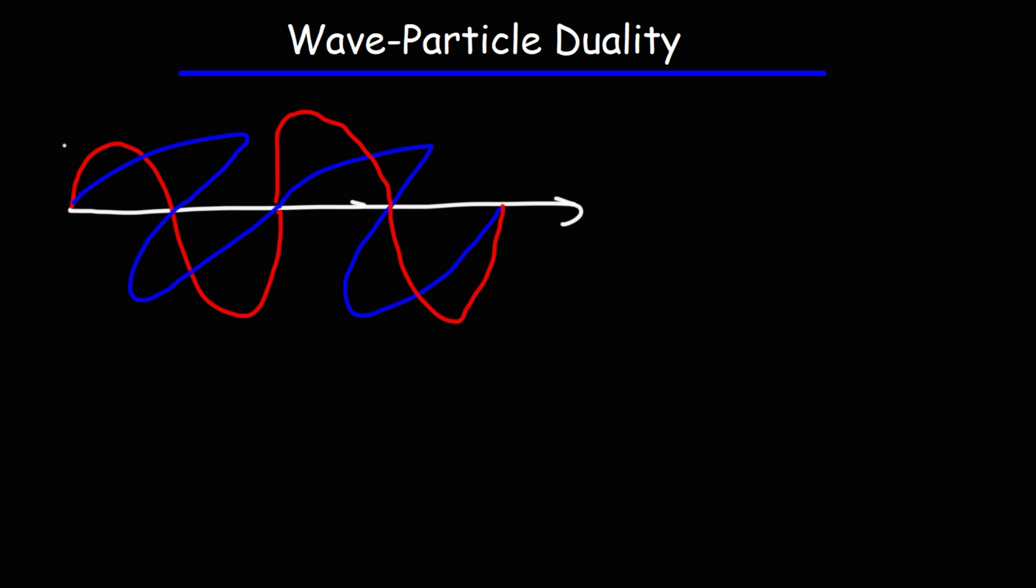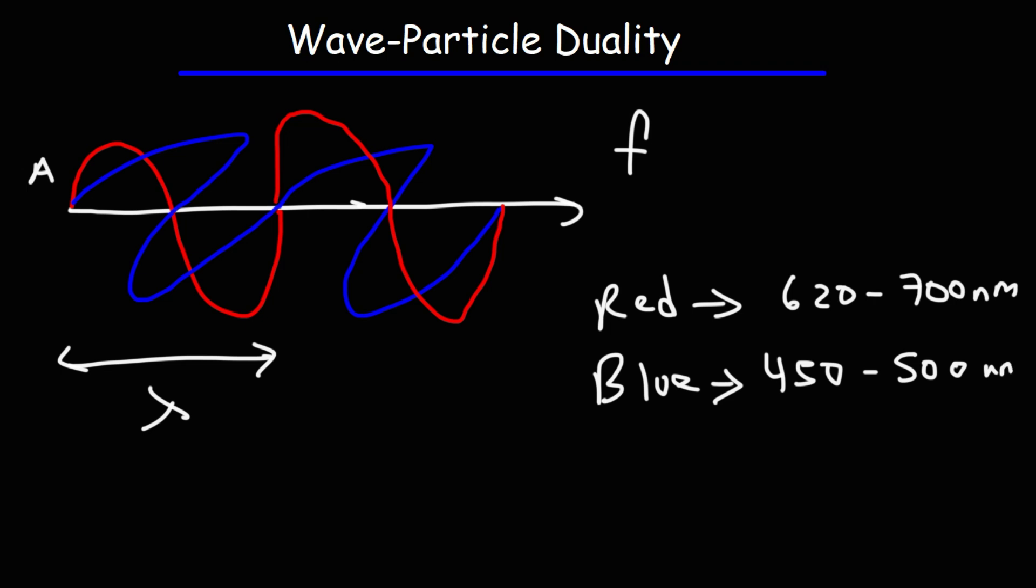Like any wave, light has amplitude, wavelength, and frequency. For instance, red light has a wavelength between 620 and 700 nanometers. Blue light has a wavelength between 450 and 500 nanometers. So the color of light varies with its wavelength and frequency.